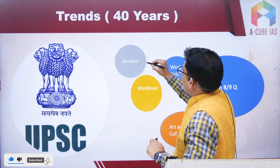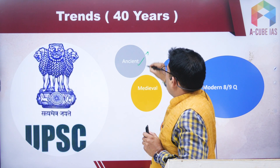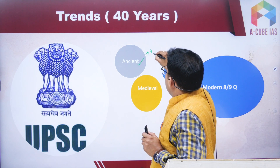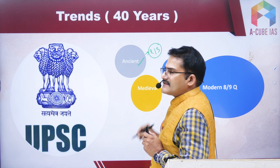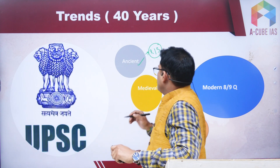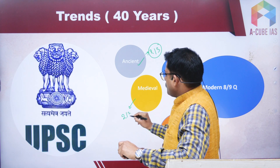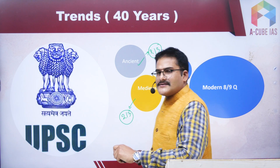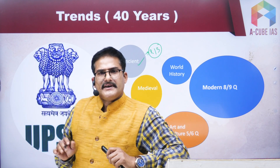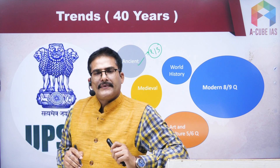When we talk about ancient history, almost each year UPSC is asking two to three questions from that section. Similarly, the trends for the medieval section are also suggestive of two to three questions only. So you can expect around two to three questions from ancient and two to three from medieval, based on the UPSC trends.